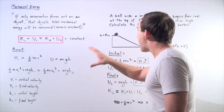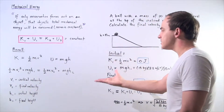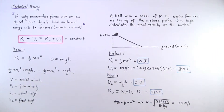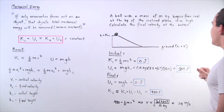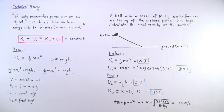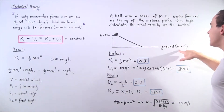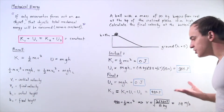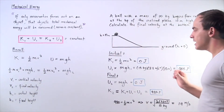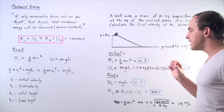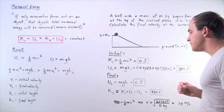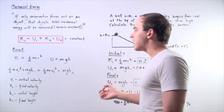Let's see how we can use this equation. Let's suppose that a ball with a mass of 10 kilograms begins from rest at the top of an inclined plane 10 meters high. We want to calculate the final velocity of the object at the bottom of our inclined plane, where the height is equal to zero. We essentially want to calculate the initial kinetic energy and gravitational potential energy, then the final kinetic and potential energy, and use that equation to solve for our velocity.